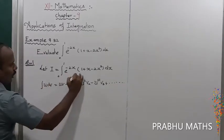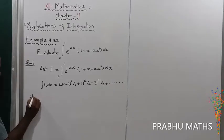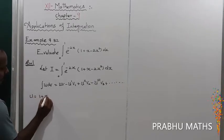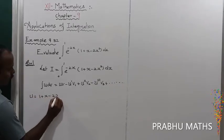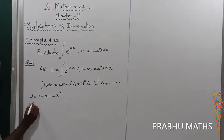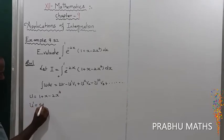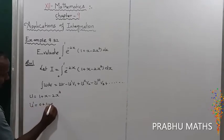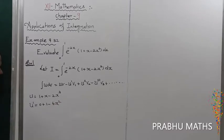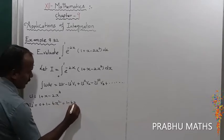Here u is equal to the algebraic function. So put u = 1 + x - 2x³. The first derivative u' = 0 + 1 - 6x² = 1 - 6x².